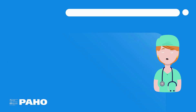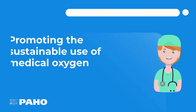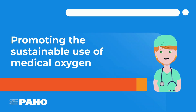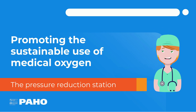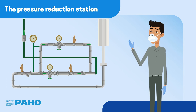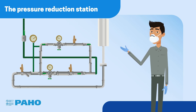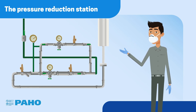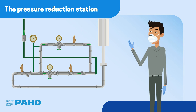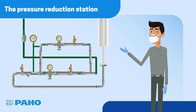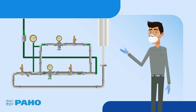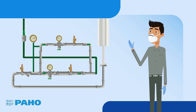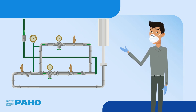This video is part of the series promoting the sustainable use of medical oxygen. Today we introduce the pressure reduction station. After the oxygen is vaporized, its pressure needs to be controlled. A pressure reduction station is used for this purpose. The station must be able to reduce the pressure of the gas and ensure the required flow to the hospital.